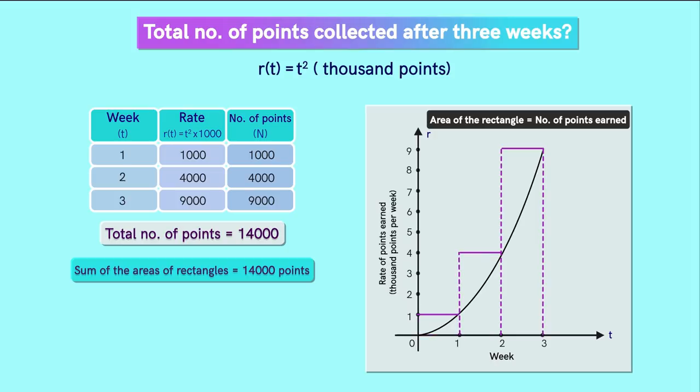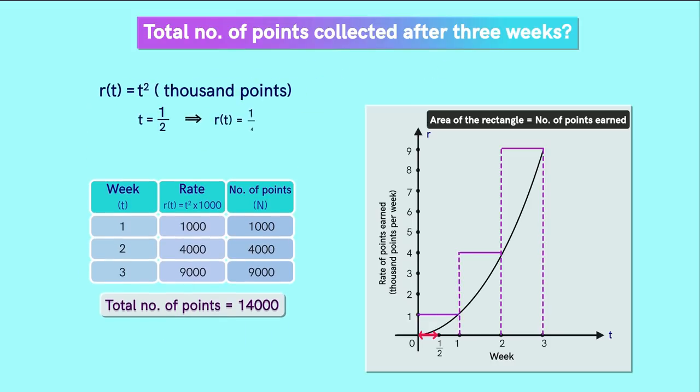But now we know that the rate is not constant during each week. Notice in the graph that in each week the actual rate is lower than the rate we considered here. Consider the first half of week 1. Here, the rate will not be equal to 1000 points per week. At the end of the first half of week 1, the rate will be one-fourth of a thousand that is 250 points per week. So let's consider this as the constant rate throughout the first half of week 1 instead of 1000.